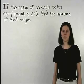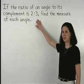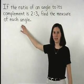In this problem, we're given that the ratio of an angle to its complement is 2 to 3, and we're asked to find the measure of each angle.